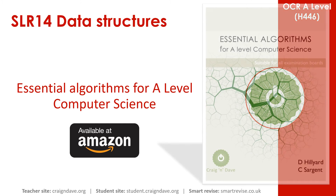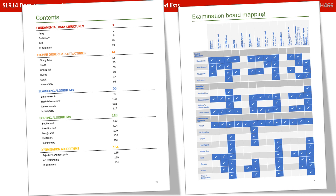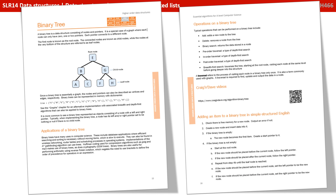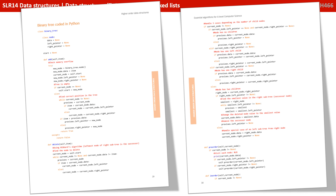We know that getting to grips with data structures and all the algorithms associated with them is a very tricky area of the course. And so we've produced a book called Essential Algorithms for A Level Computer Science, available on Amazon. It covers all the data structures you need to know about, along with the algorithms you need to perform on them, and it covers all the exam boards. We overview each data structure, discussing its typical applications and the operations you can perform on it. We provide a QR code that links to a useful page of additional resources. We then take each data structure and present the algorithms first in simple structured English, then in a diagrammatic format, then in pseudocode, and finally in fully coded algorithms in both Python and VB, so you can practice them yourselves.